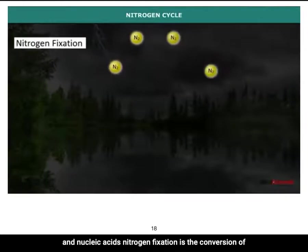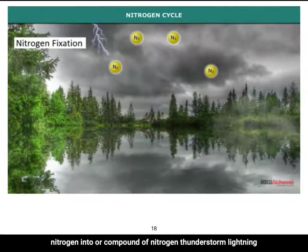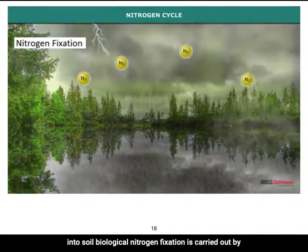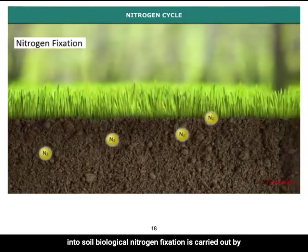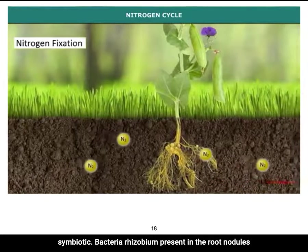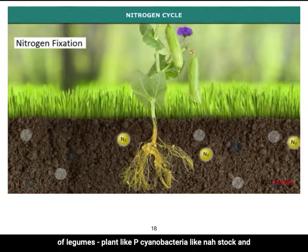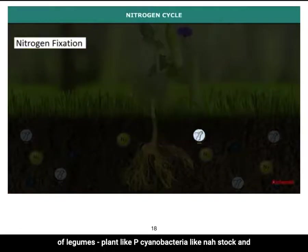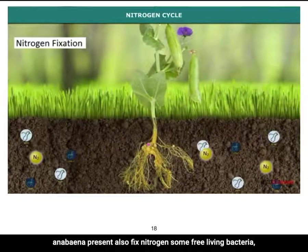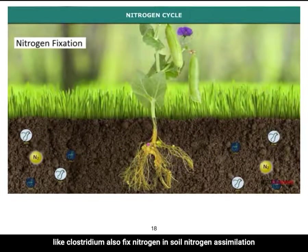Nitrogen fixation is the conversion of nitrogen into a compound of nitrogen. Thunderstorms, lightning, and rain help transfer large quantities of nitrogen into soil. Biological nitrogen fixation is carried out by symbiotic bacteria — rhizobium — present in the root nodules of leguminous plants like pea. Cyanobacteria like Nostoc and Anabaena also fix nitrogen, as do free-living bacteria like Clostridium.